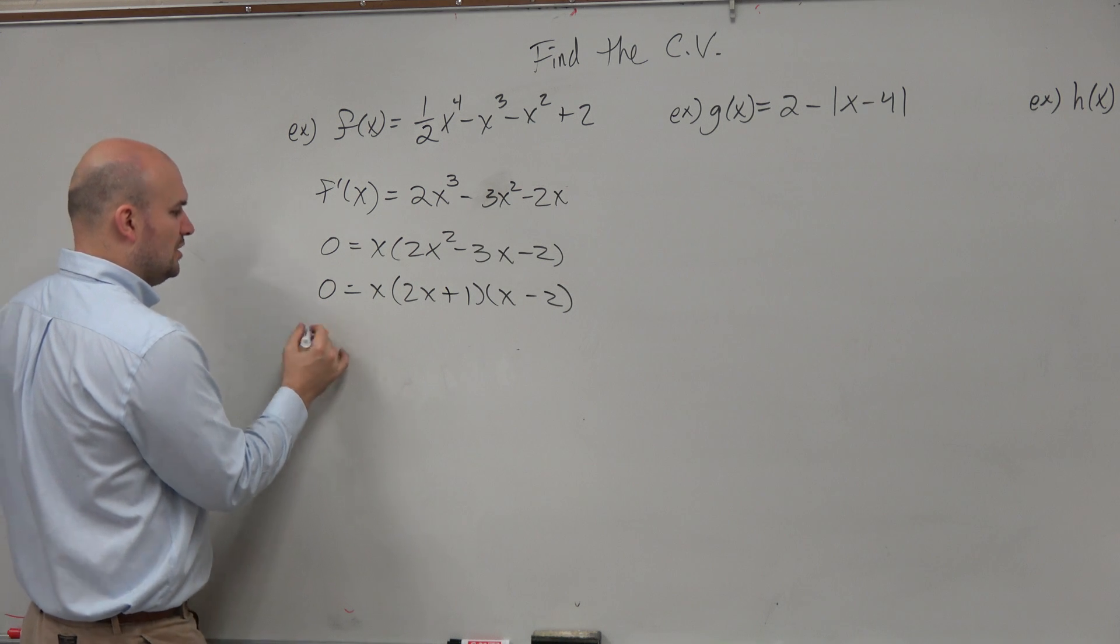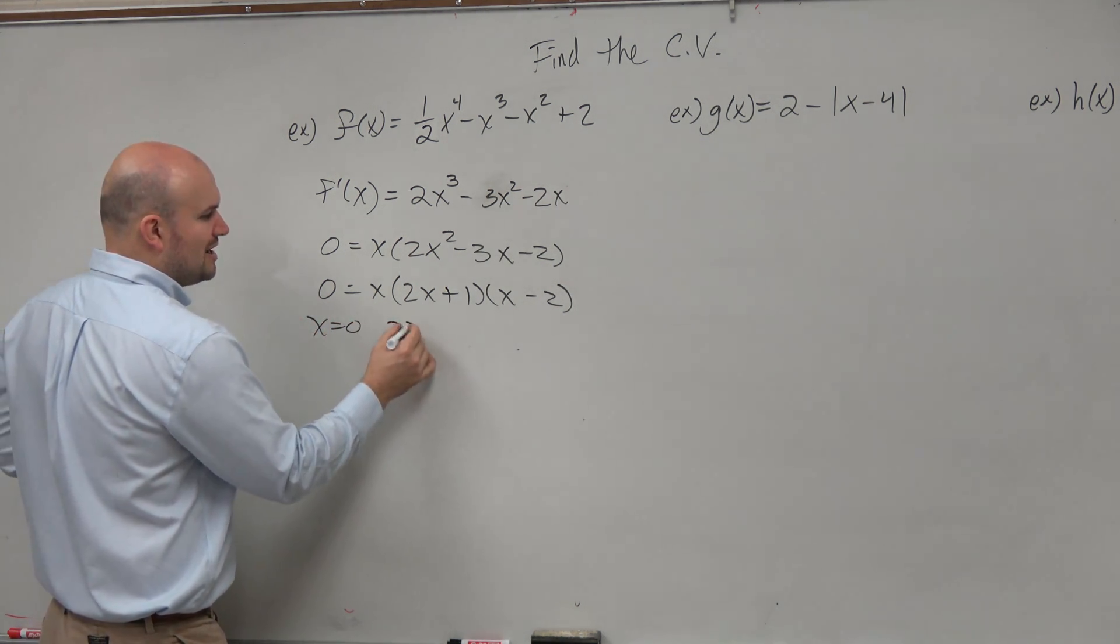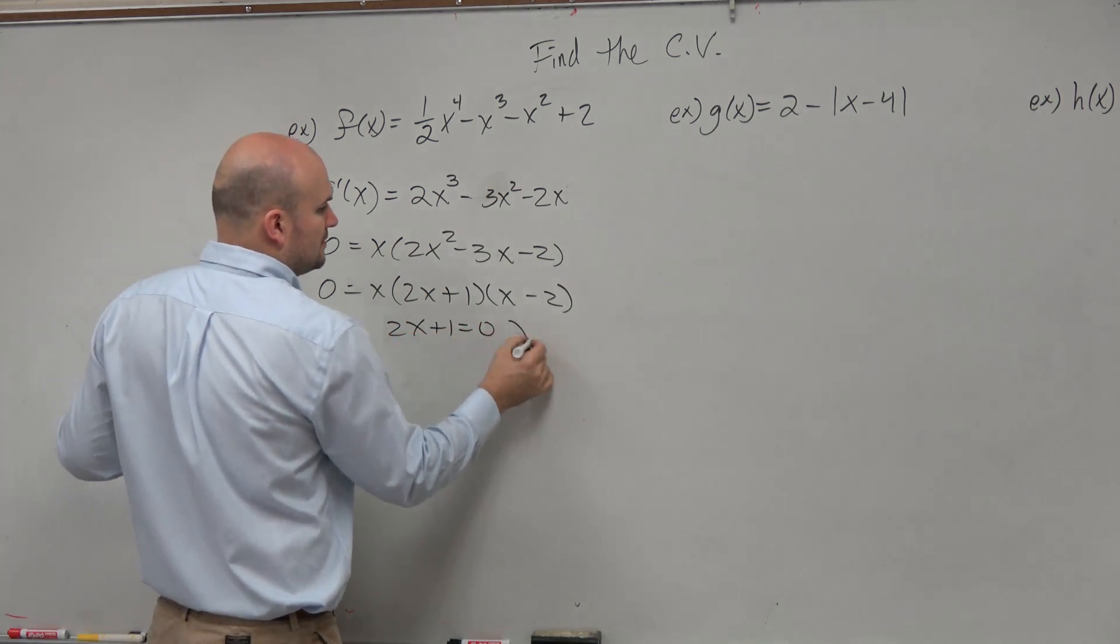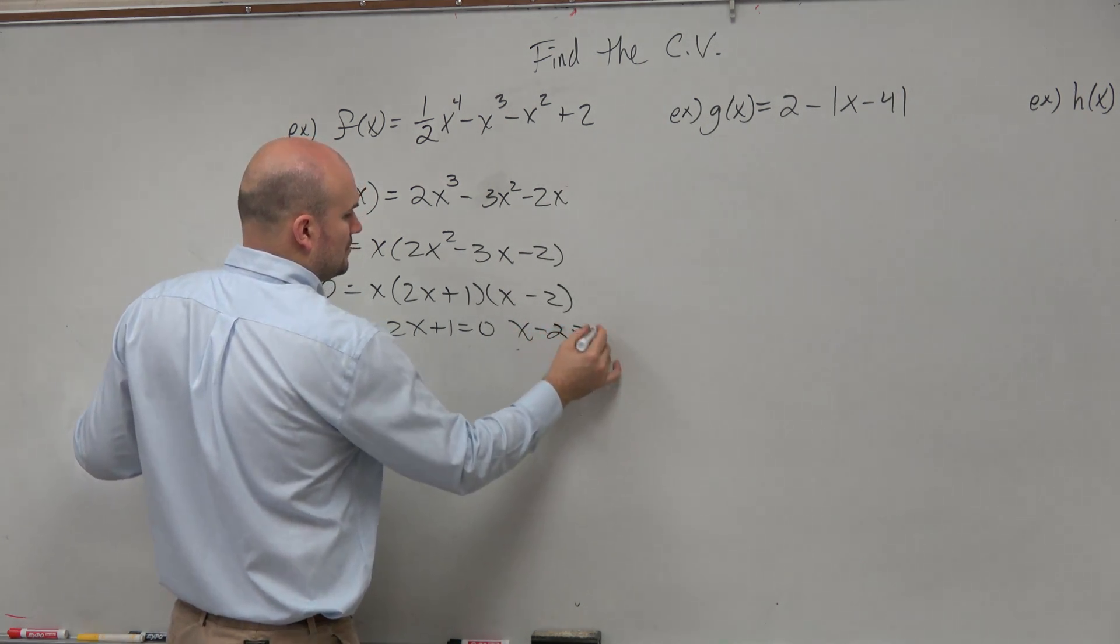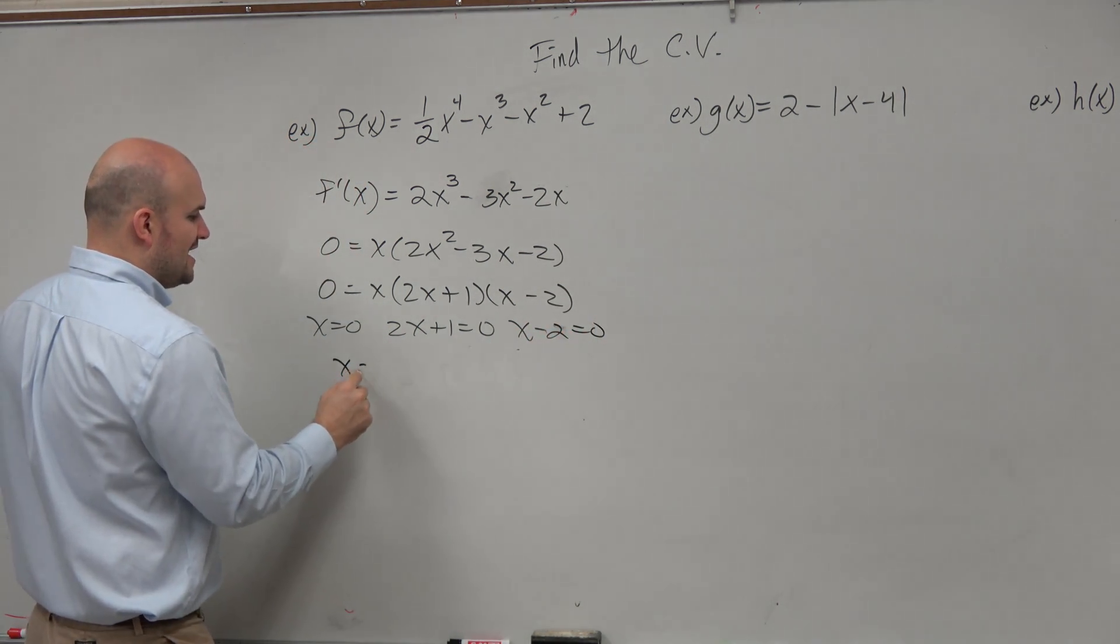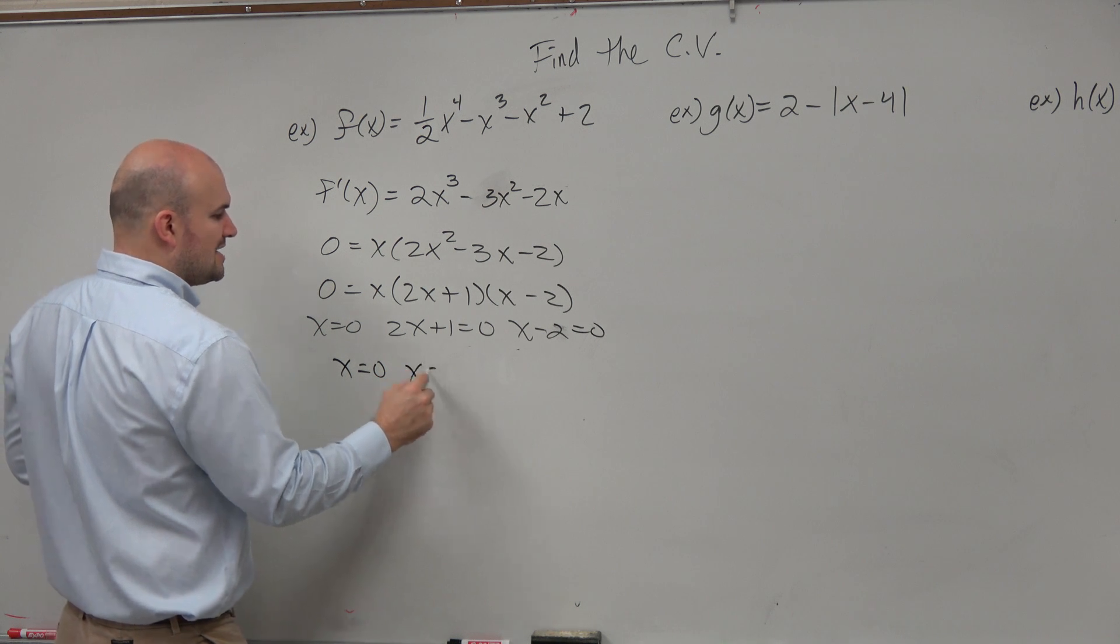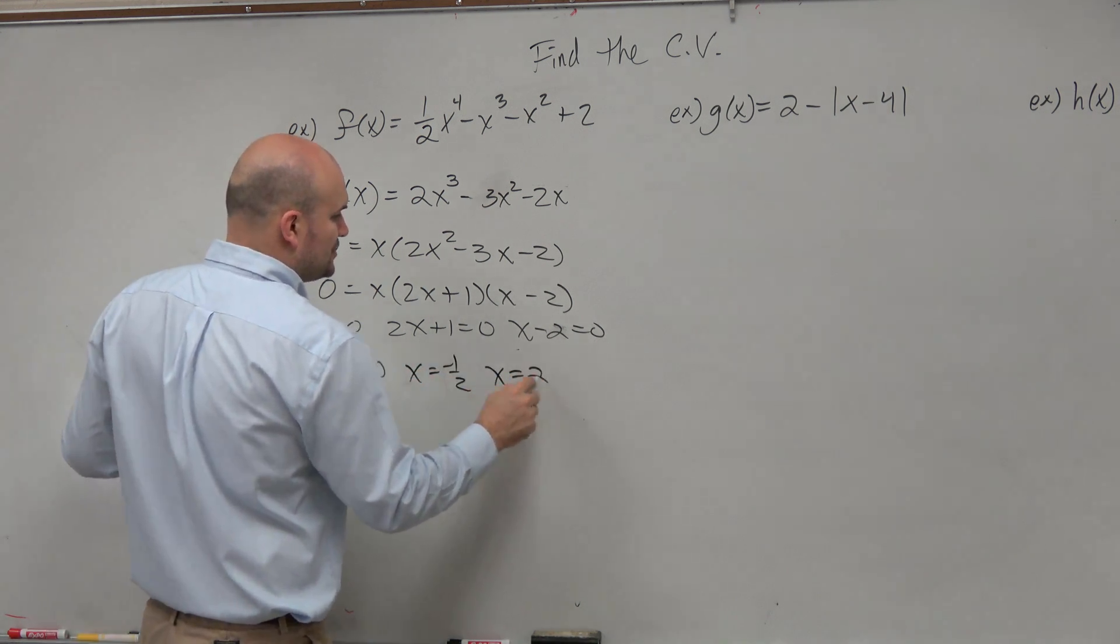So now, when I set these all equal to 0 by applying the zero product property, I have x = 0, x = -1/2, and x = 2.